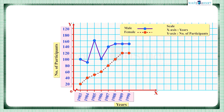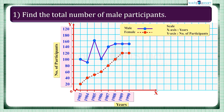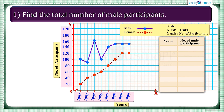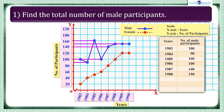The first question is: find the total number of male participants. In the graph, the solid line represents the number of male participants. The number of male participants in each year was 100, 90, 160, 100, 140, 150, 150, and 150. Adding these values, we get the total number of male participants as 1040.